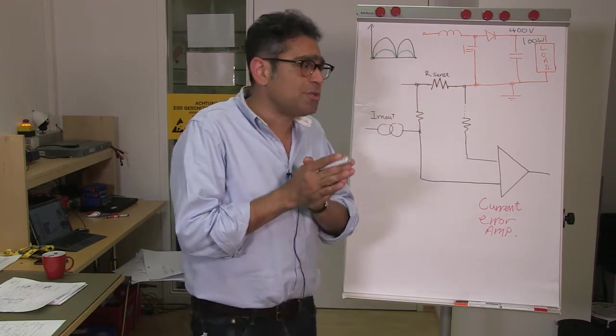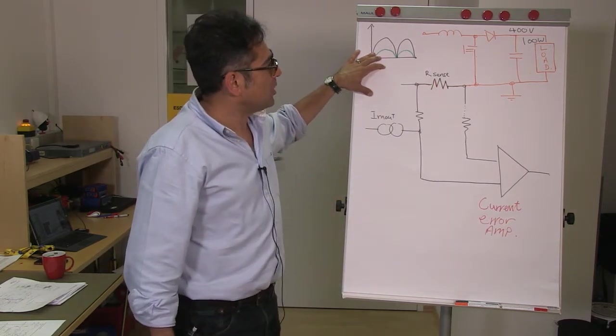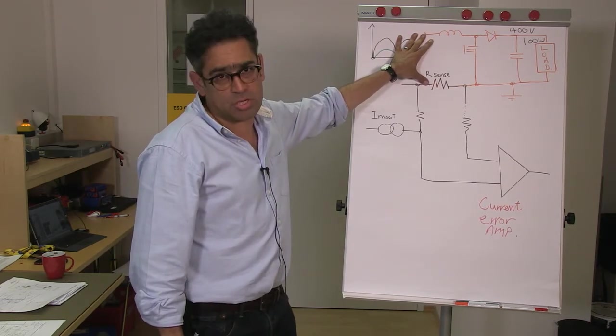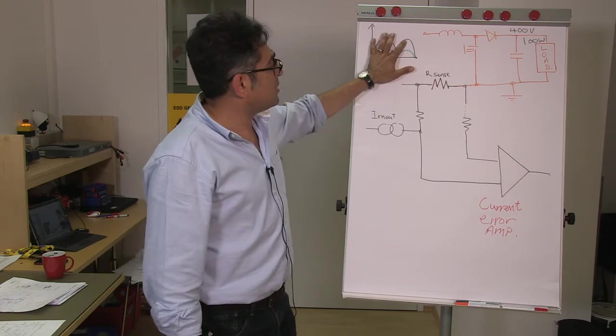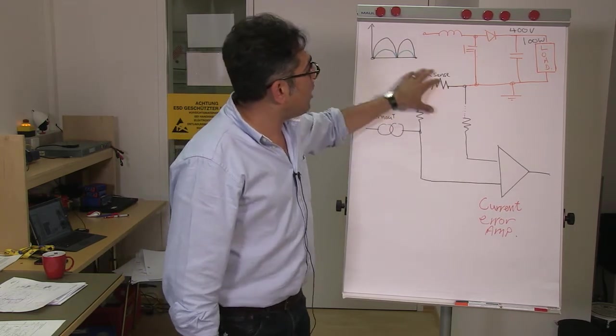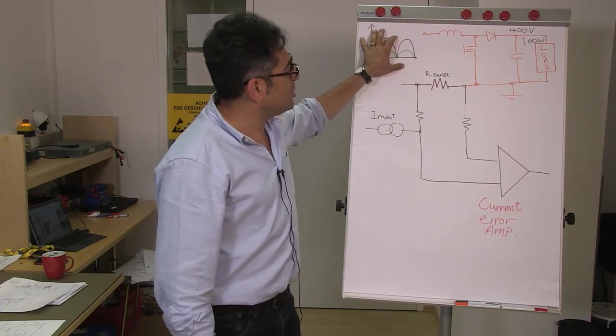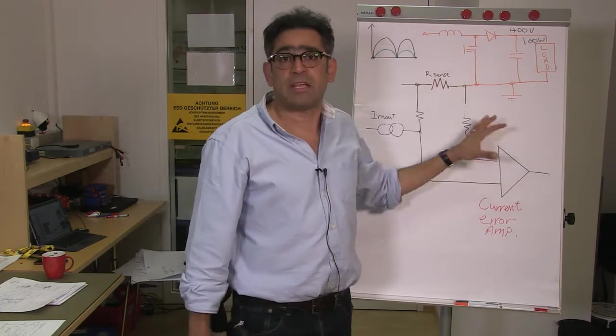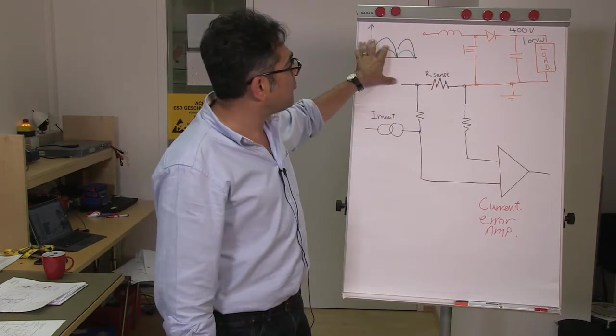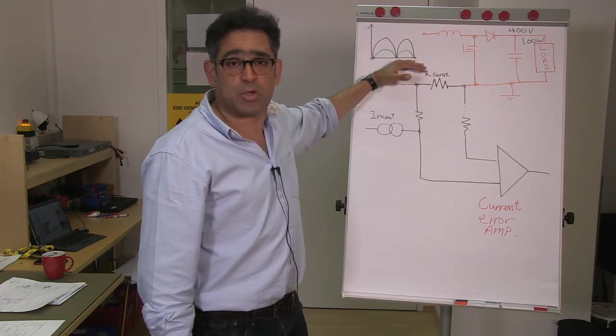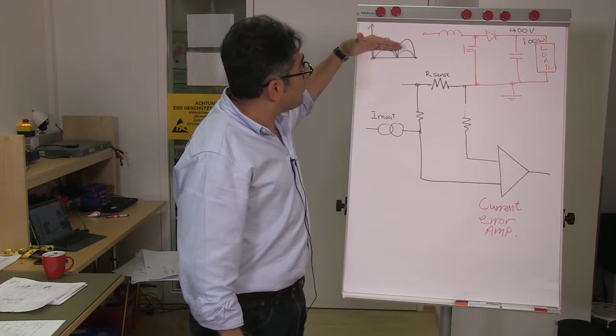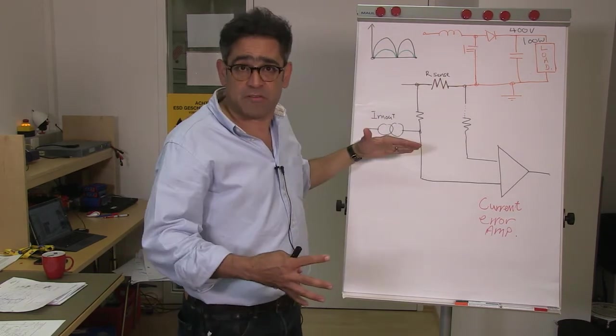And the issue that we have here is that the input to the boost power stage, this is an average current mode continuous conduction mode boost, is a rectified sine wave. Now you cannot measure the loop whilst the input is changing like so, mainly because it's changing the reference of the error amplifier for the current. So you're going to have to freeze this in time and then make your measurement. And you will need to do it at different points in the waveform in order to get a family of curves.